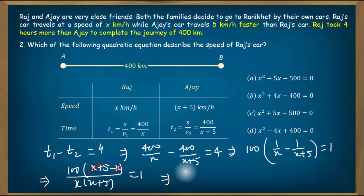Cross-multiplying gives us x squared plus 5x equals 500. Moving 500 to the left side, we have x squared plus 5x minus 500 equals 0. Option C is correct.